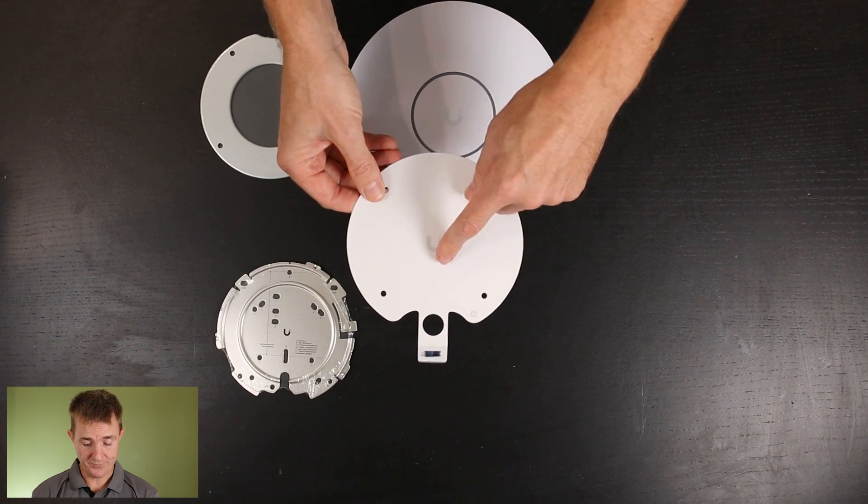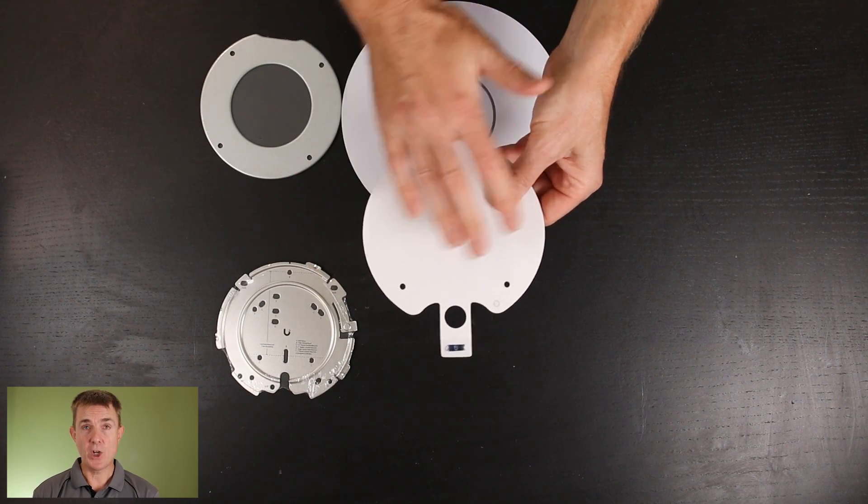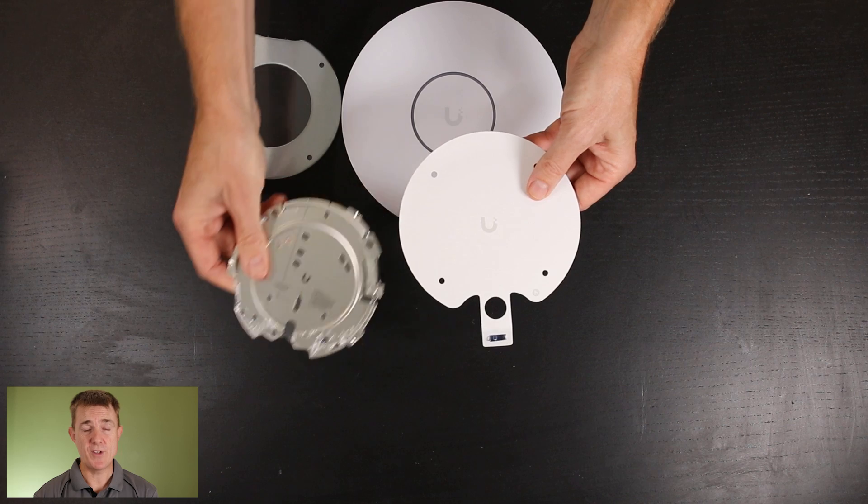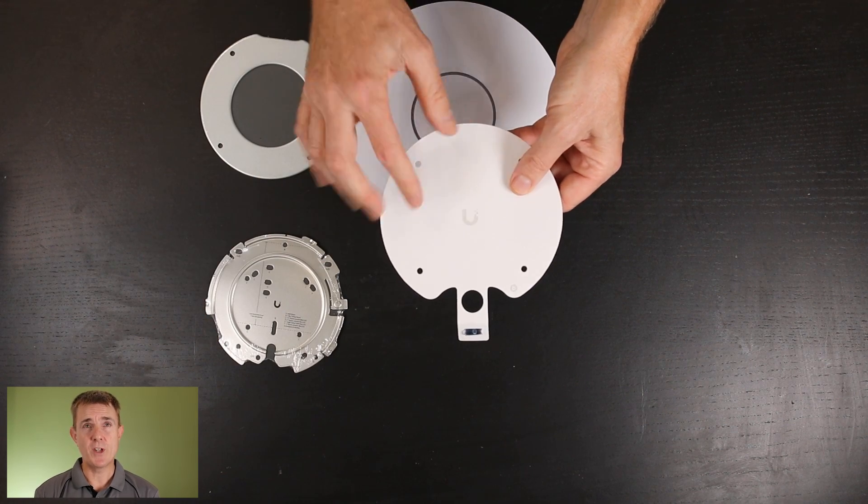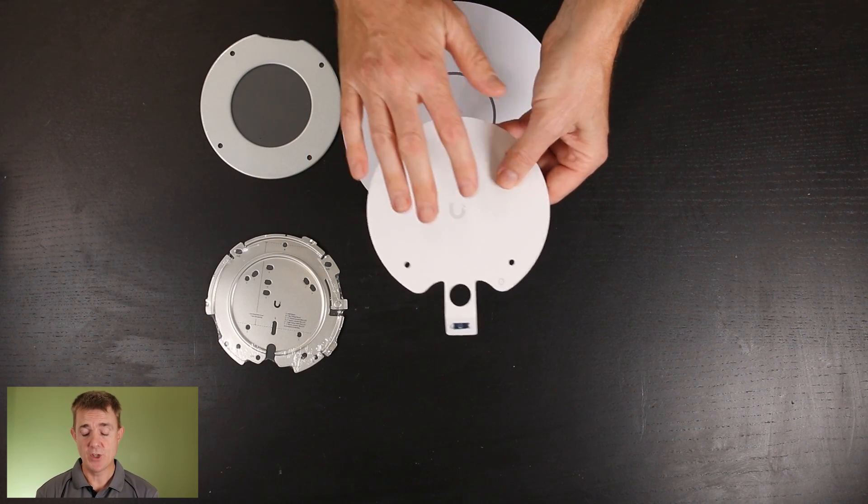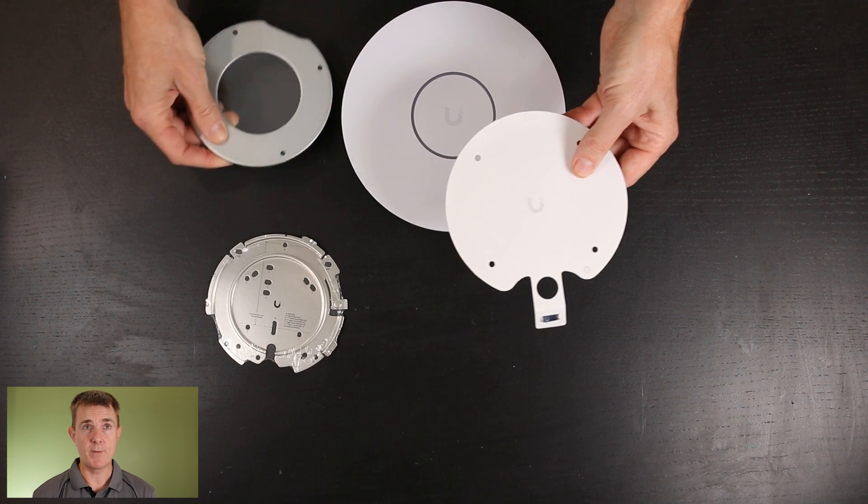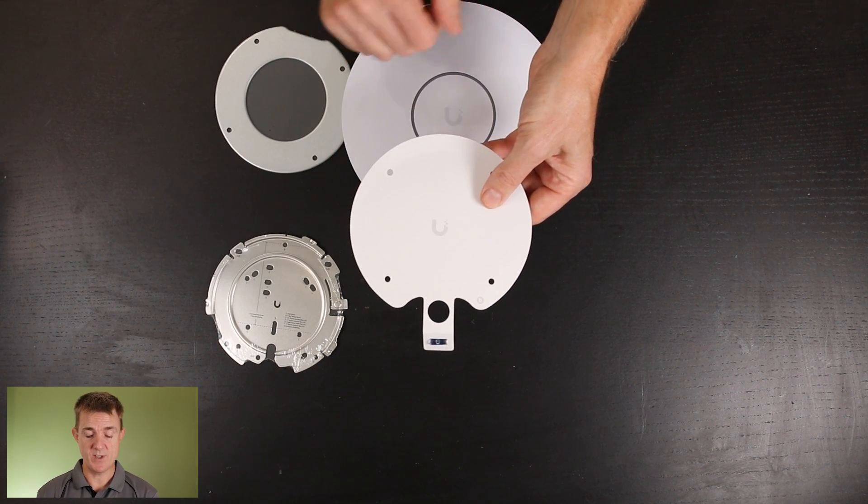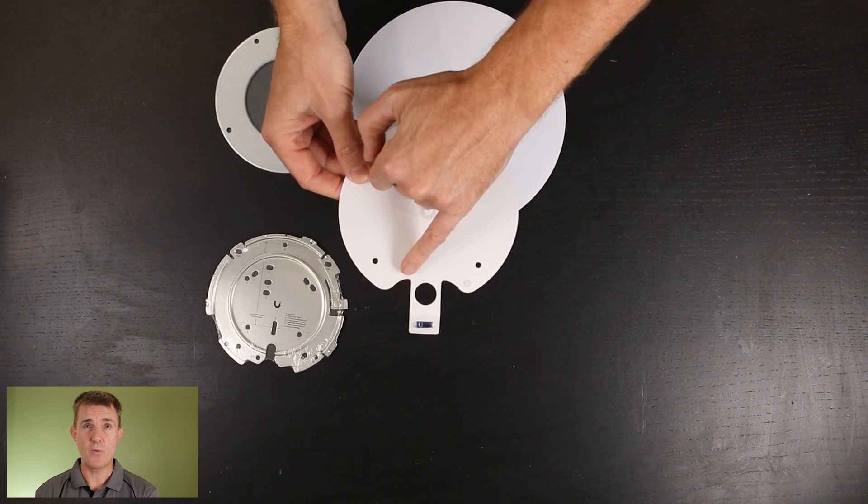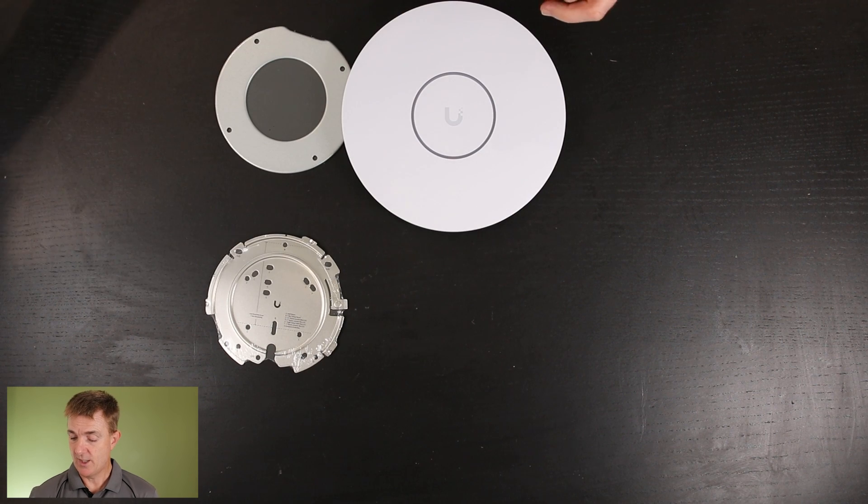You're going to get a drilling guide here. This is either going to be straight onto a hard surface using this. Alternatively, you can put this into a false ceiling and sandwich the plates together, which I'll show you in a moment to fix this with the ceiling tile. So this gives you an idea of where your ethernet cable is going to come in.